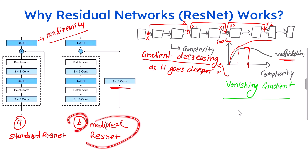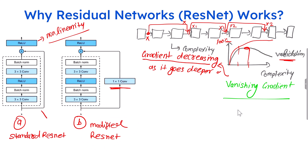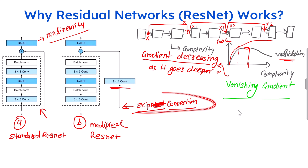In the modified ResNet, there is a 1x1 convolution. These connections are also known as skip connections. This ResNet introduced the skip connection, where you are skipping your input and it is going directly to be added later in the network.